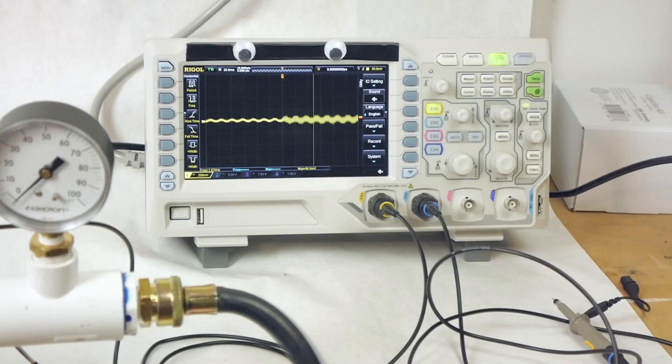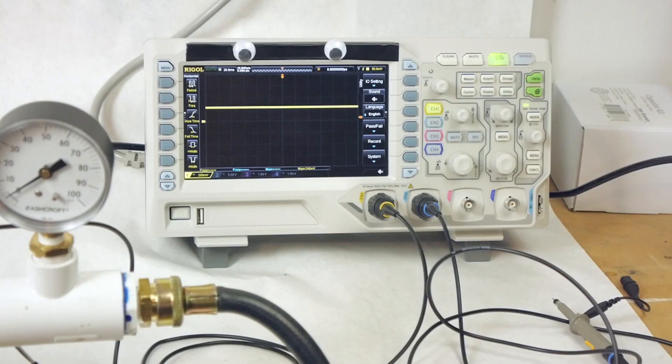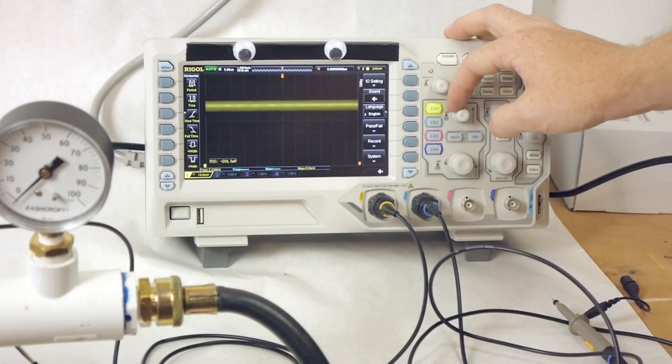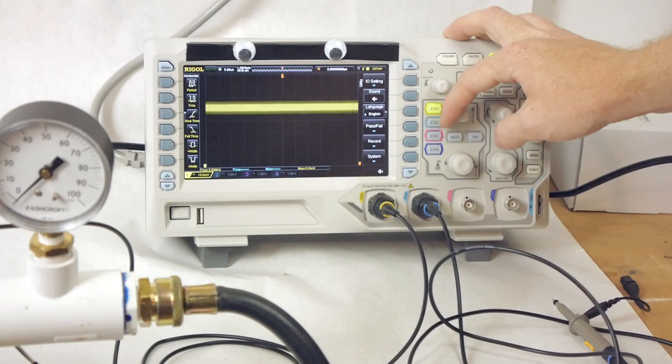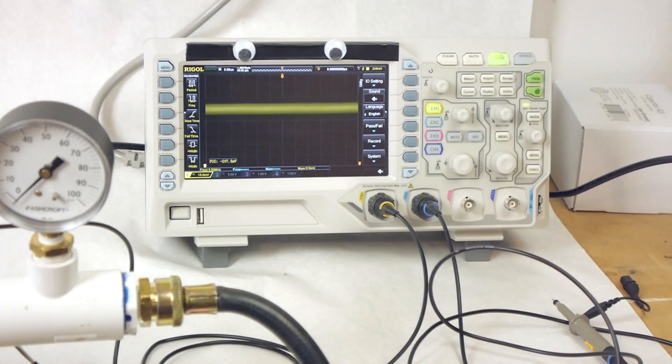Watch what happens when I start to let the water flow through the pipe. The voltage jumps. We're definitely getting an electrical response to the flowing water, but you can see that we have a fairly noisy signal. It would be a major challenge to try and convert this signal into a flow reading.